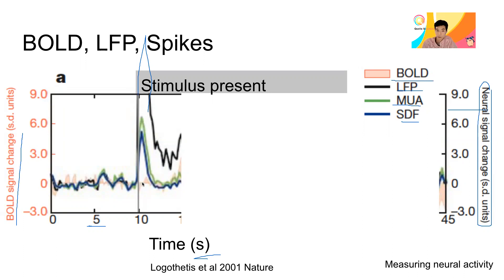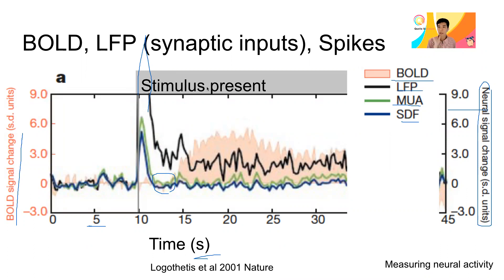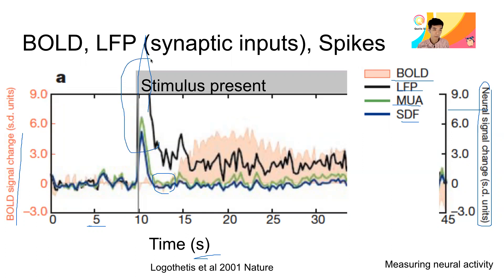Disappointingly, the BOLD signal doesn't do anything initially. When the stimulus is first shown, it doesn't respond. But after about five seconds, it starts to catch up and increase. By the time the BOLD signal is increasing, LFP has gone down, and spiking on average returns to a flat, near-baseline level. Interestingly, even when presenting a stationary and interesting stimulus, many neurons fire initially and then return to baseline — yet the conscious phenomenological experience remains.